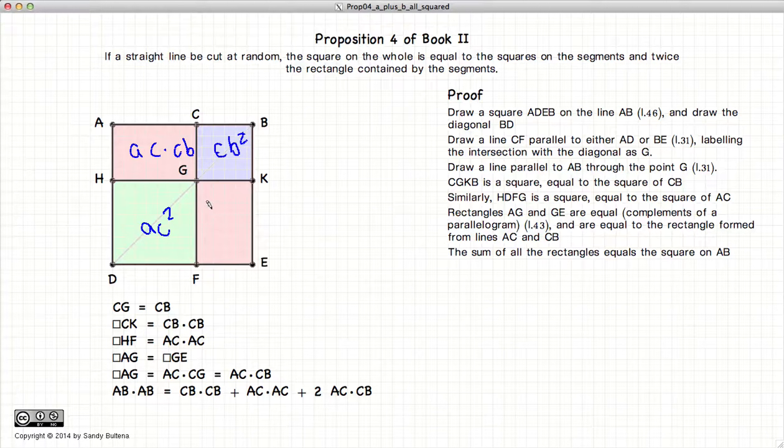This area also equals AC times CB. Therefore, AB squared equals AC squared plus CB squared plus twice AC times CB. Thus we have demonstrated the proposition.